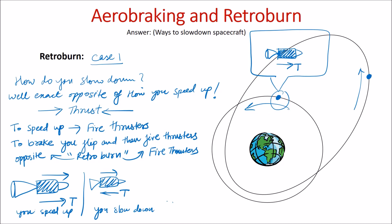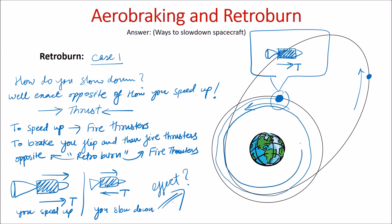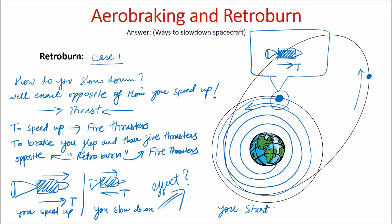Now you know how to slow down a spacecraft. But what are the effects of slowing down a spacecraft when it's orbiting around the Earth? As you slow down the spacecraft, it starts coming closer and closer to Earth — you move closer to Earth in a spiral.